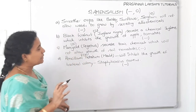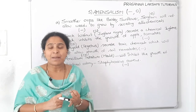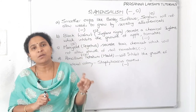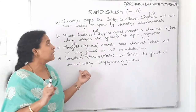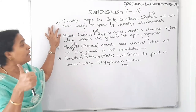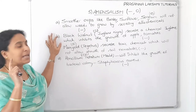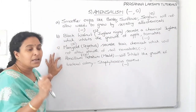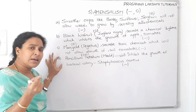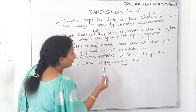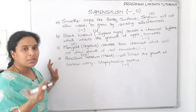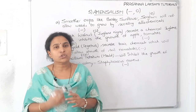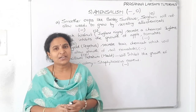All these are examples of amensalism. In today's lecture we discussed commensalism — plus and zero — and amensalism — minus and zero. We studied about 8 or 9 examples for commensalism and 4 examples for amensalism. The sea anemone with hermit crab and sea anemone with clown fish have come in the NEET examination. If you like the content, please like, share and subscribe to the channel. Thank you!